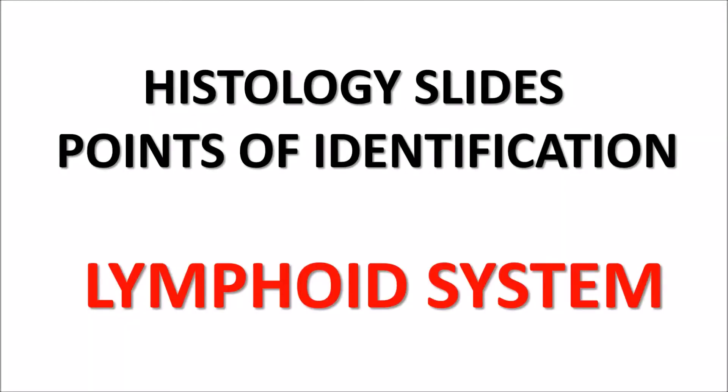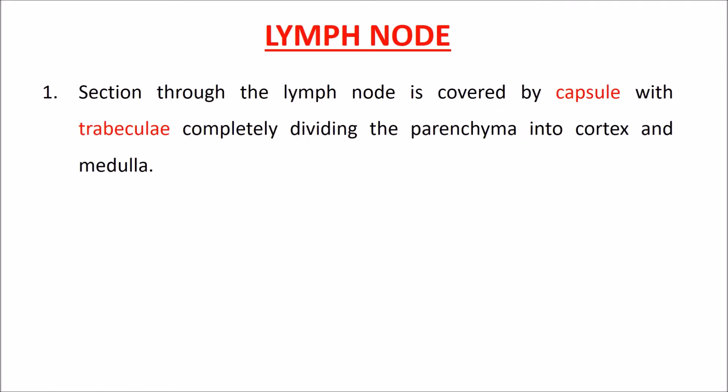The topic of today's video is histology slides — points of identification for the lymphoid system. Lymph node: a section of the lymph node is covered by a capsule with trabeculae, with subcapsular and trabecular sinuses present deep to the capsule and trabeculae respectively, not completely dividing the parenchyma into cortex and medulla.